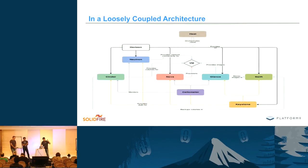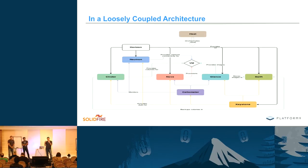The way OpenStack is architected — as you can see in this diagram — all the services are essentially their own project tied together through APIs. There are a number of reasons for that, including the fact that it will scale better. Cinder happens to be one of those distributed projects that are part of this architecture.